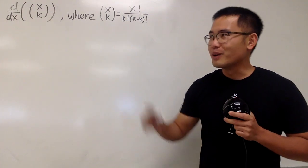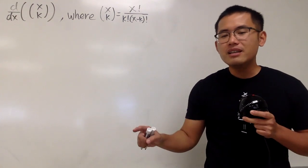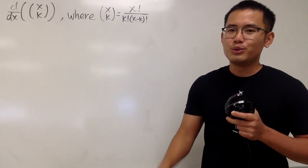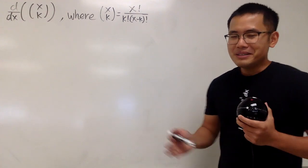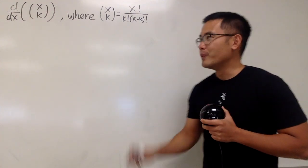Well, in fact, I saw this on Wikipedia. They have d/dt of t choose k, but I just want to use x instead. And the result is actually pretty cool. Some of you guys might not like it, but we are going to do this anyway.